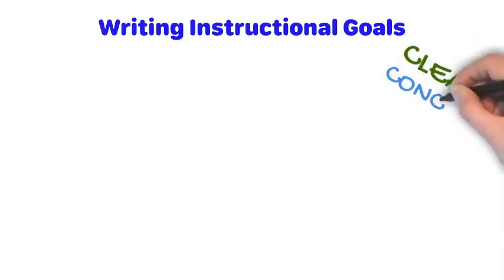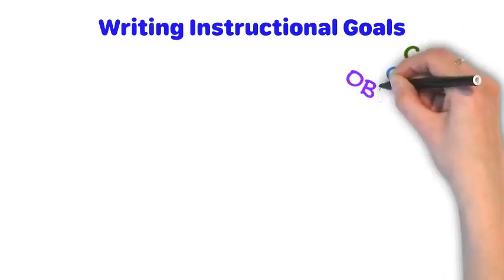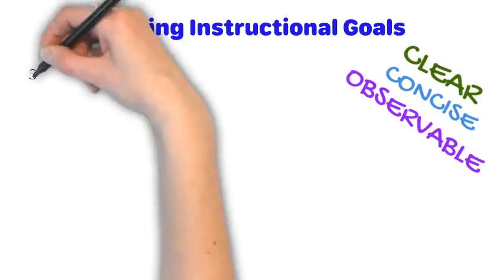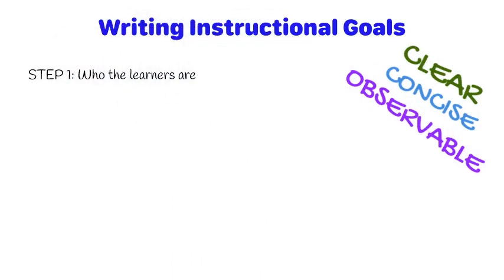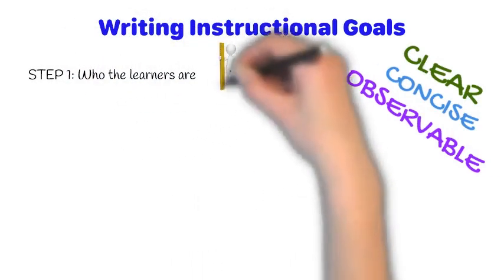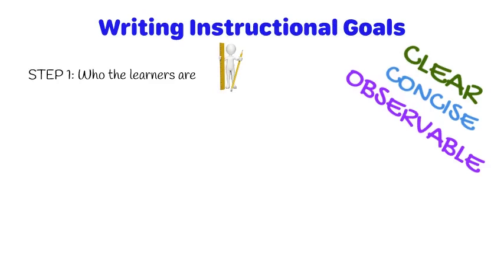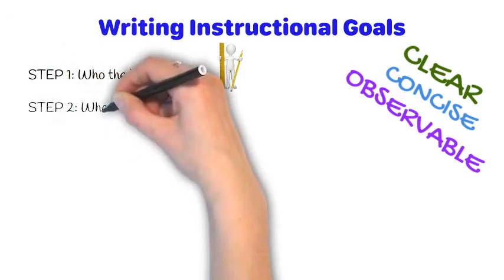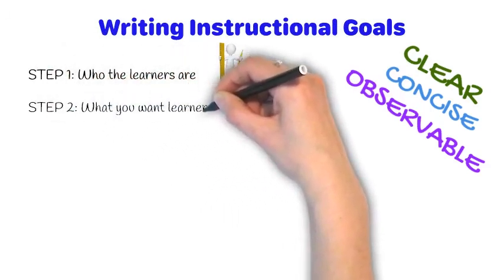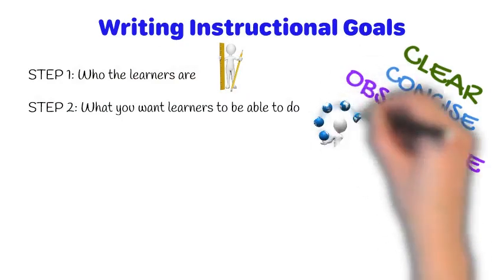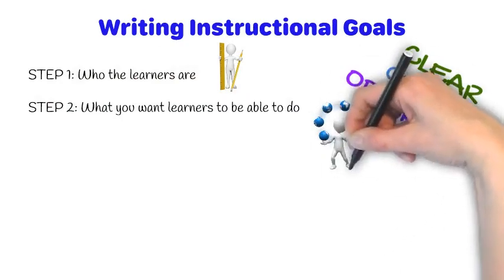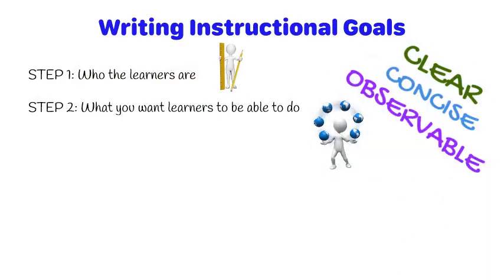Good instructional goals are clear, concise, and have observable outcomes. Step 1 is to articulate who the learners are — that is, who is it that will be participating in the training? Step 2 is to articulate what you want the learners to be able to do after they've completed the instruction.